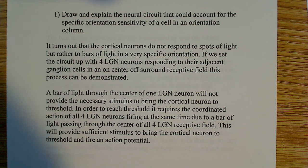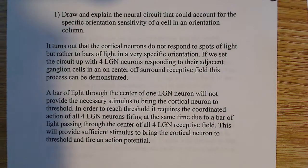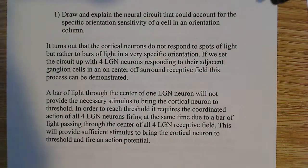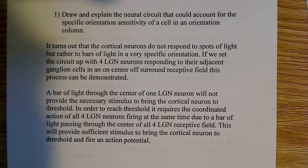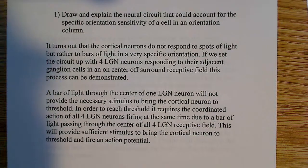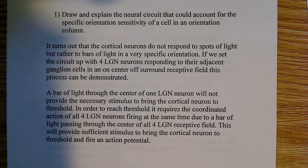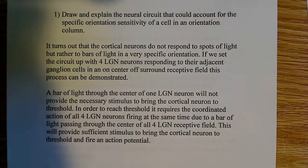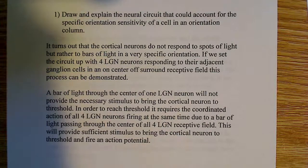So I have an interesting question here, getting back to neurobiology. It says: draw and explain the neural circuit that could account for the specific orientation sensitivity of a cell in an orientation column. So they want to know how this sensitivity could be accounted for. Now, this involves a cortical neuron, and it turns out that cortical neurons do not respond to spots of light. You might recall that spots of light work for the ganglion cells, but spots of light do not work for these cortical neurons.